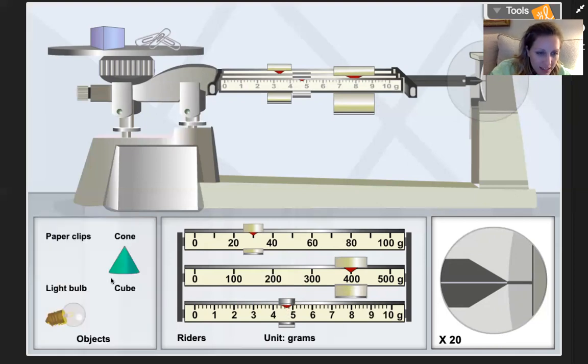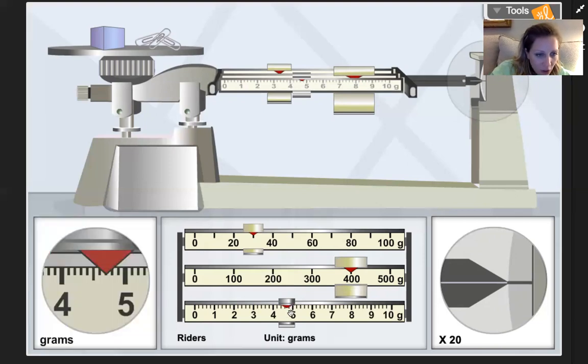And that little bit is how many little ticks over, so we have one, two, three, four, five, six, seven, so that's seven tenths or 0.7, so this would be 434.7 grams.